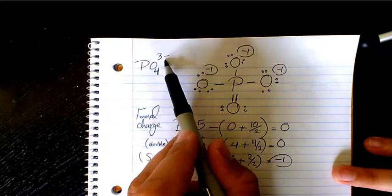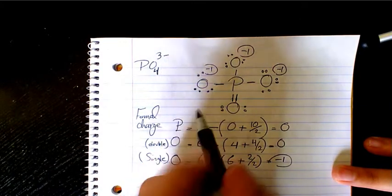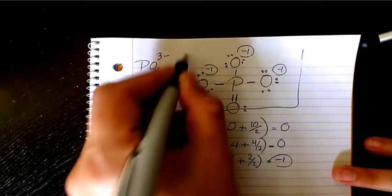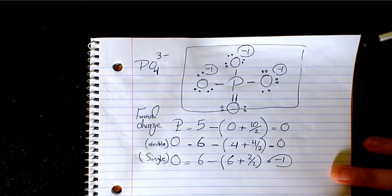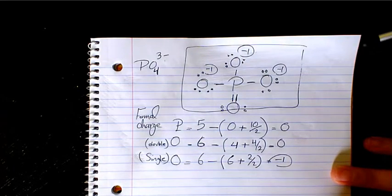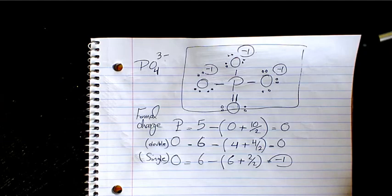When we sum the formal charges — 0 for phosphorus, 0 for the double-bonded oxygen, and negative 1 for each of the three single-bonded oxygens — we get negative 3, which matches the phosphate ion charge. That's the best Lewis structure for phosphate. I hope you enjoyed this video; please leave a comment if you have any questions.